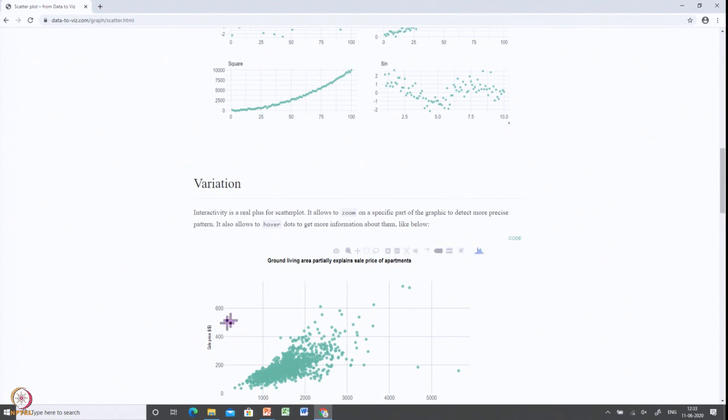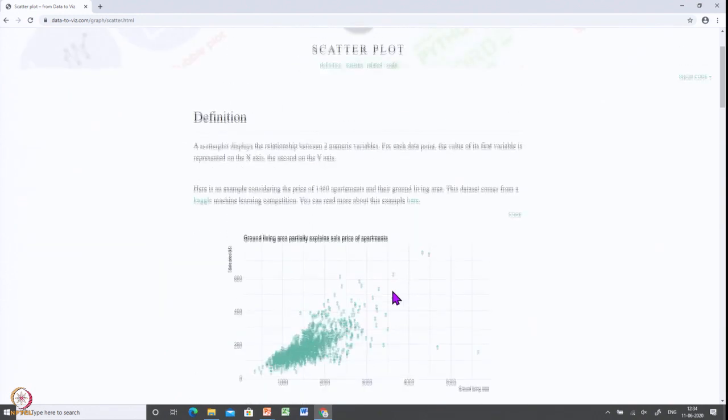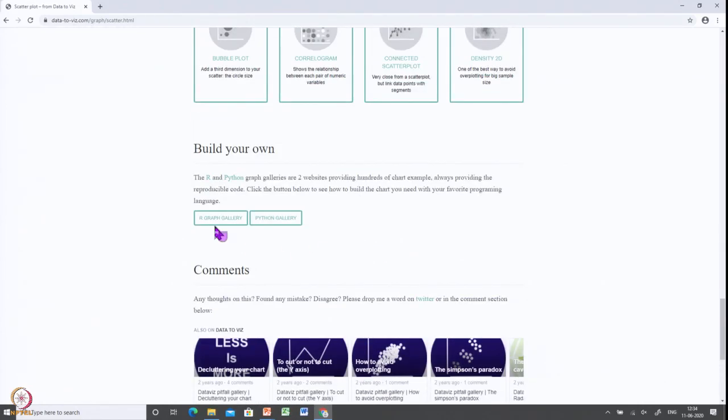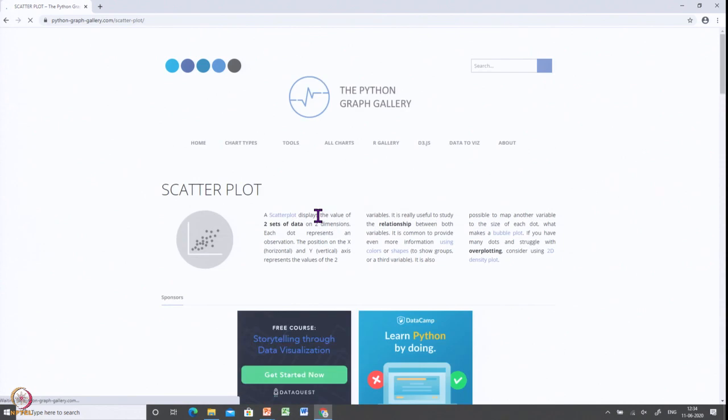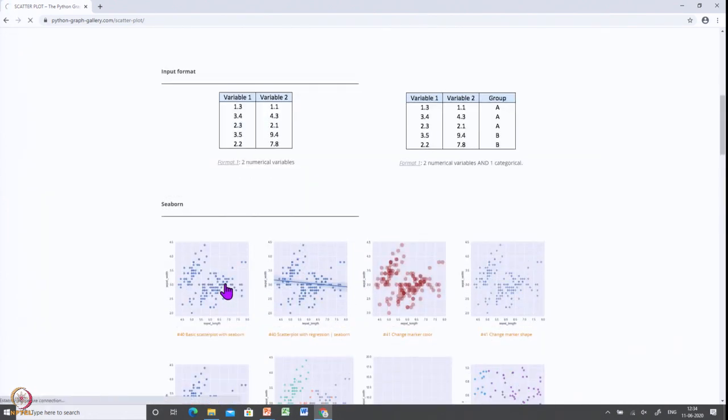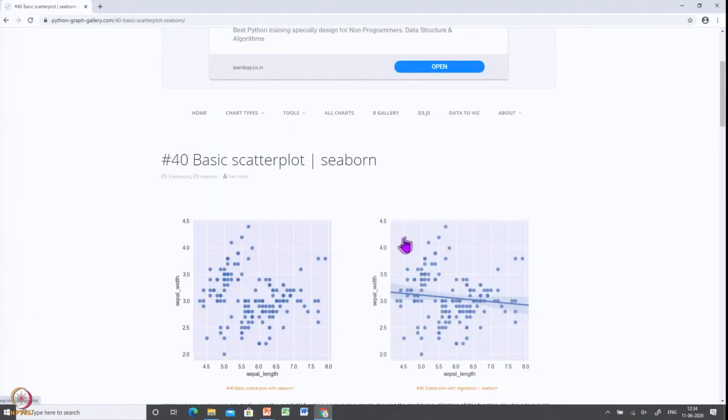Interestingly, when you look at this, the code is given. The code is generally for JavaScript, but if you want to use the code for Python, let us go and look at the Python gallery. And let us look at this chart, scatter plot.